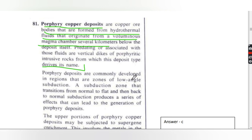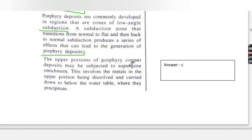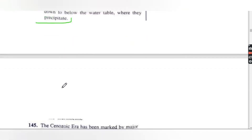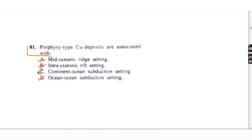A subduction zone transitioning from normal to flat and back to normal subduction produces effects that can lead to the generation of porphyry deposits. The upper portion may be subjected to supergene enrichment, where metals are dissolved and carried down below the water table where they precipitate. Therefore, the answer is C: continent-ocean subduction setting.